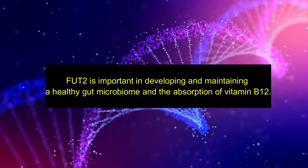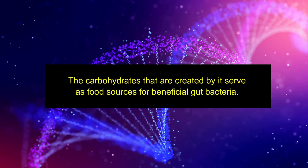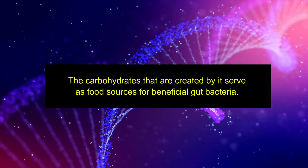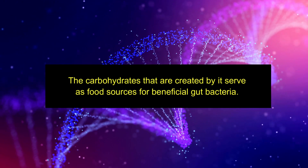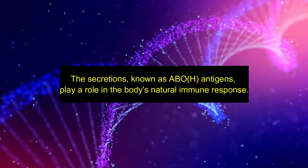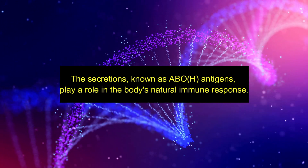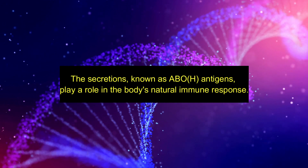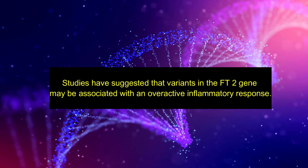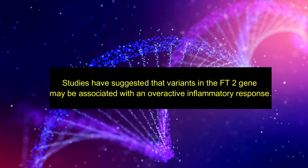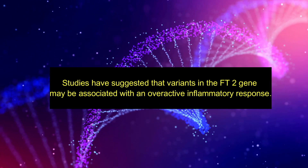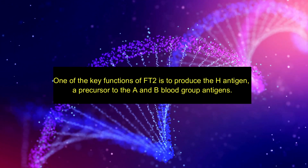The carbohydrates that are created by FUT2 serve as food sources for beneficial gut bacteria. The secretions known as ABO and H antigens play a role in the body's natural immune response. Studies have suggested that variants in the FUT2 gene may be associated with an overactive inflammatory response.